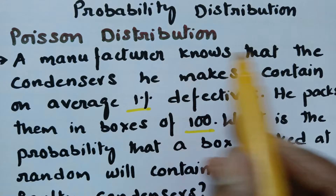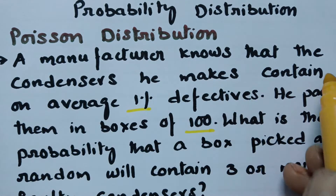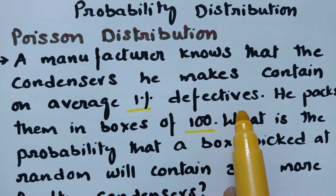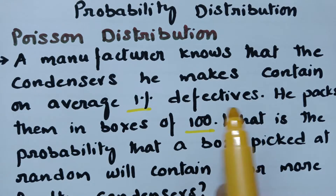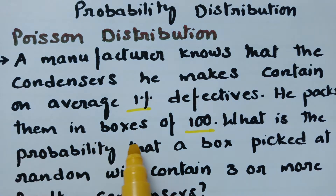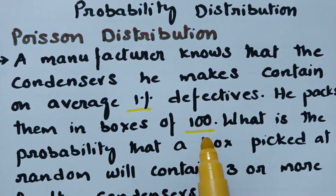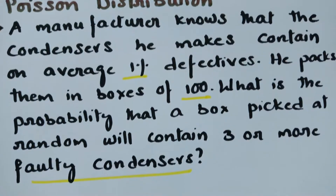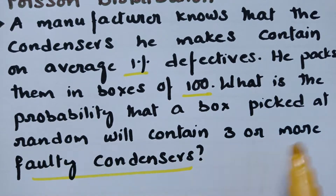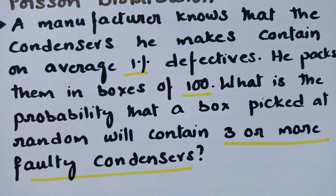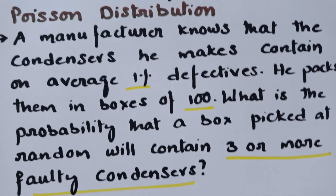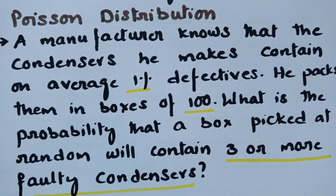A manufacturer knows that the condensers he makes contains on average 1% defectives. Defective condensers are 1% and he packs them in a box of 100, so each box contains 100 condensers in which 1% are defective. In Poisson distribution, it is very clear that the average value is given, so when the average is given, we choose Poisson distribution when solving.